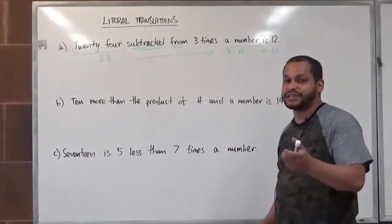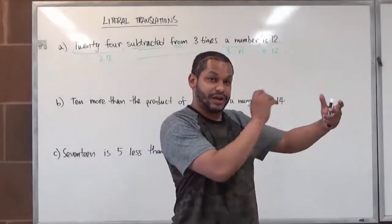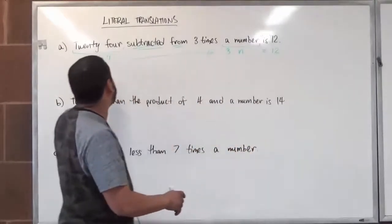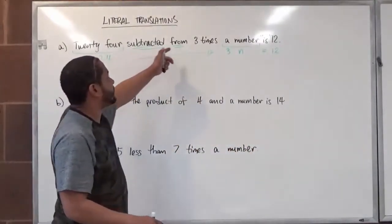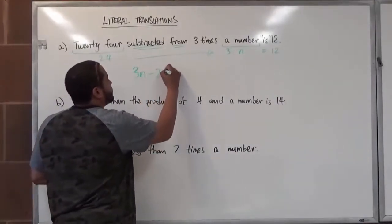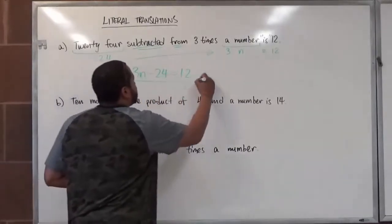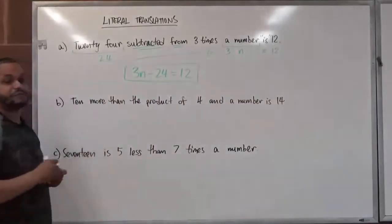In other words, if you're subtracting $20 from your bank account, you're taking the bank account value, subtracting $20 from it. So here if we're taking 24 subtracted from 3 times a number, what we have then is 3n minus 24 equivalent to the value of 12. And this is the literal translation of the first problem up here.